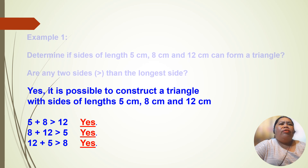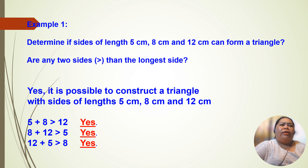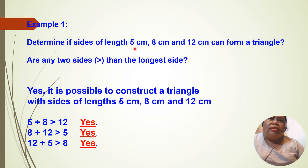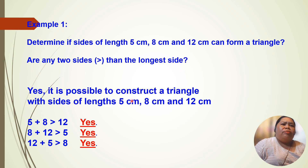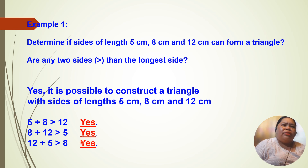Example number one: determine if the side lengths of 5 cm, 8 cm, and 12 cm can form a triangle. Are any two sides greater than the longest side? Yes, it is possible to construct a triangle with sides of length 5 cm, 8 cm, and 12 cm, because 5 plus 8 is greater than 12 — yes; 8 plus 12 is greater than 5 — yes; and 12 plus 5 is greater than 8 — yes.